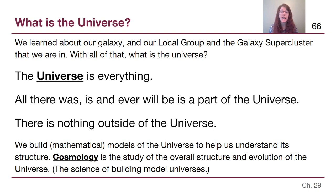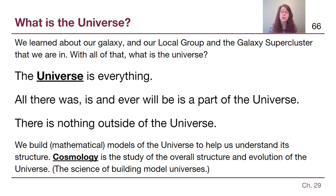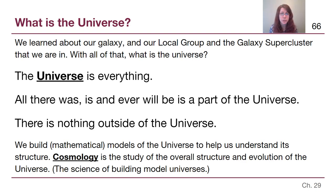Let's start with: what is the universe? At this point in the curriculum, we've learned about our galaxy in Chapter 25, our local group in Chapter 26 — the fact that we belong to several galaxies clustered together in one neighborhood — and about galaxy superclusters. With all of that large-scale structure, what is the universe? The universe — capital U Universe — is everything. All there ever was, all there is, all there ever will be is part of the capital U Universe. There is nothing outside of the universe — and I don't mean nothing like void. We cannot define an outside of the universe because the universe is everything.